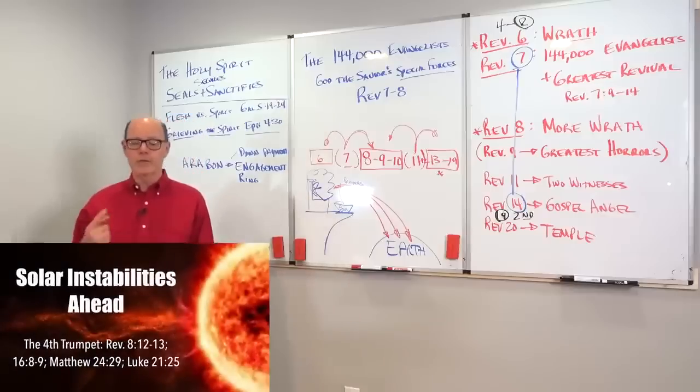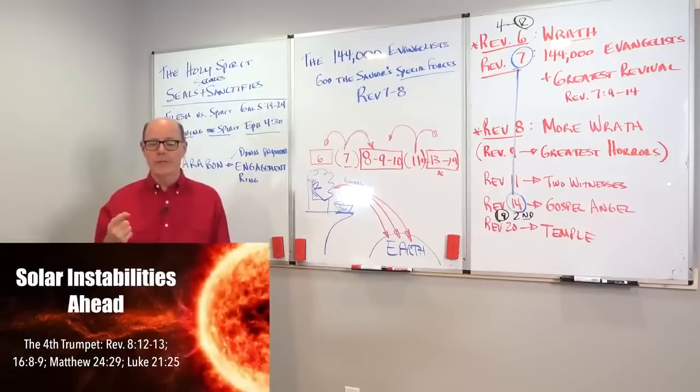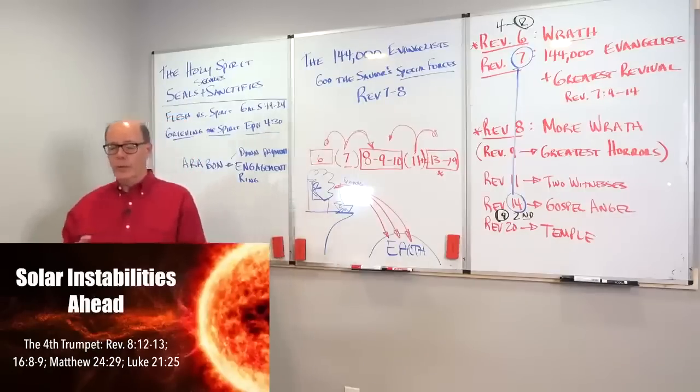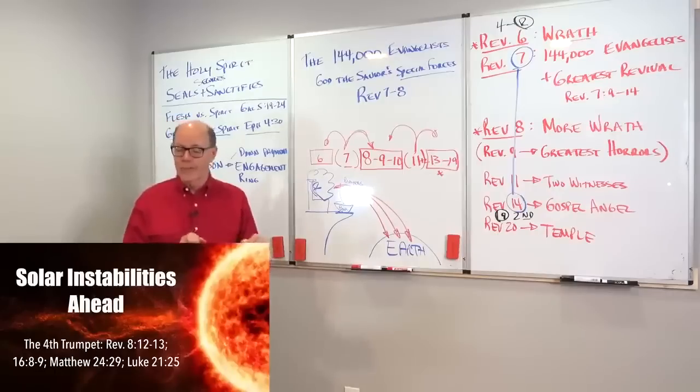Look at the next slide. There are solar instabilities ahead. With that fourth trumpet, by verse 12, we find the Lord saying the sun will be darkened. The earth will become scorched, and yet the sun will get darker. What this could be is, and we know it scientifically, is what you see on the screen.